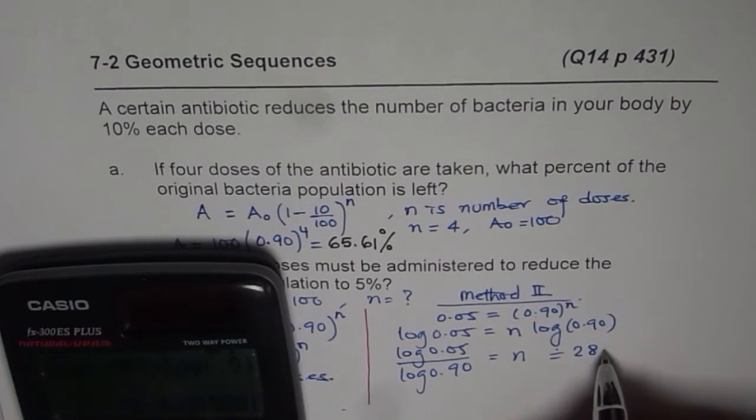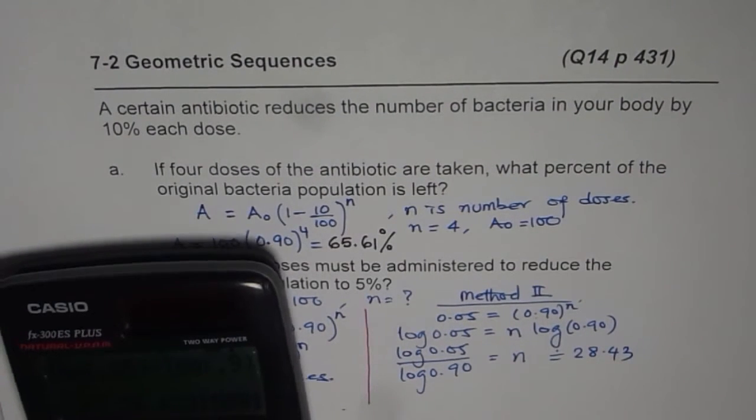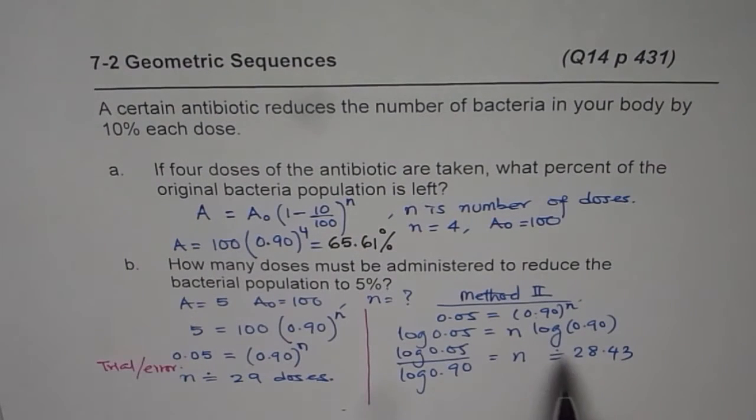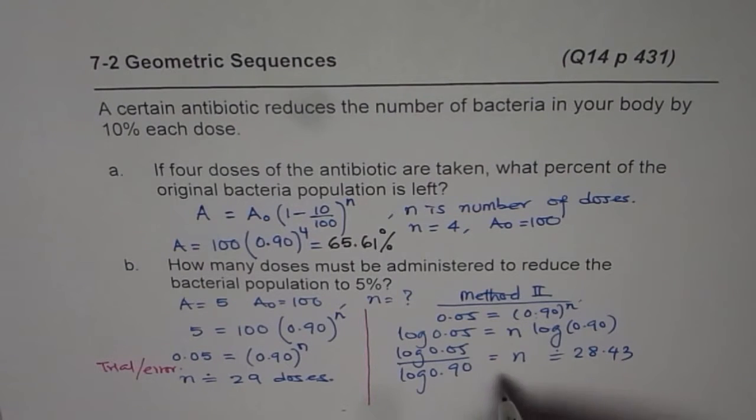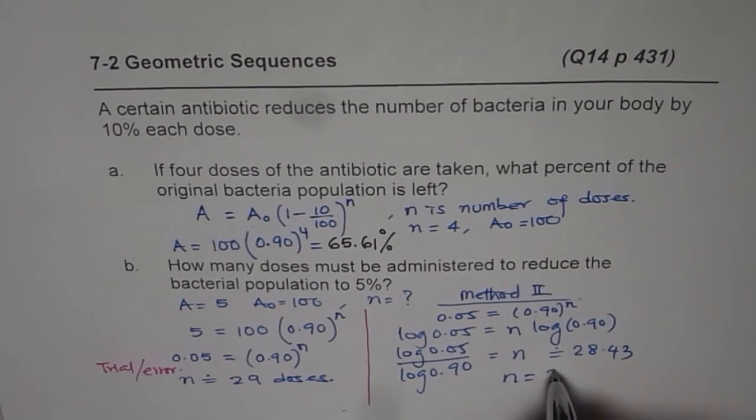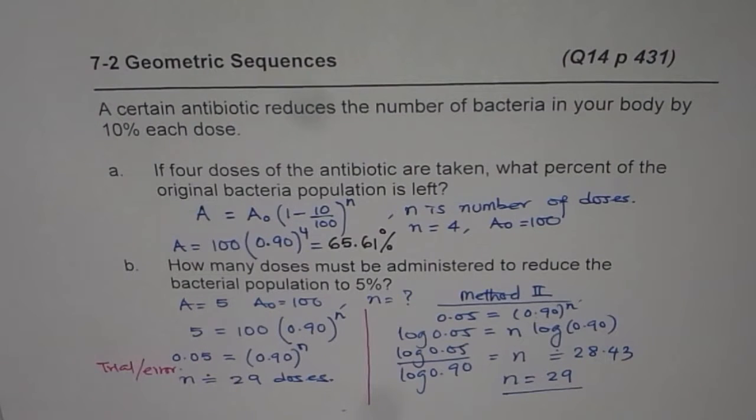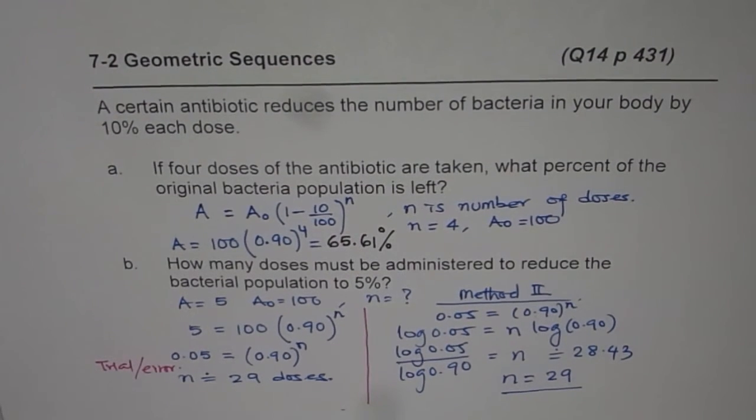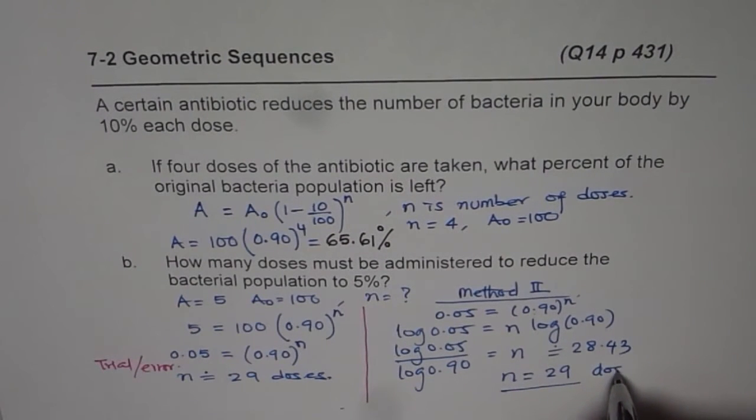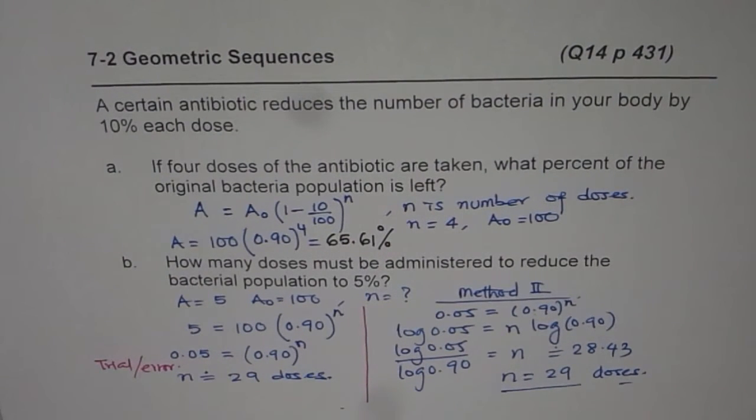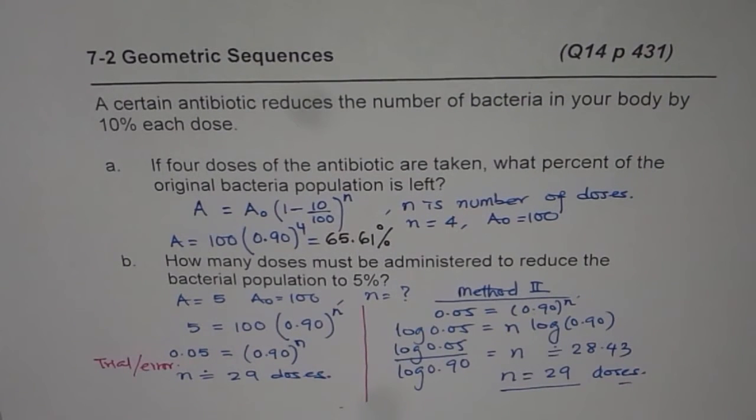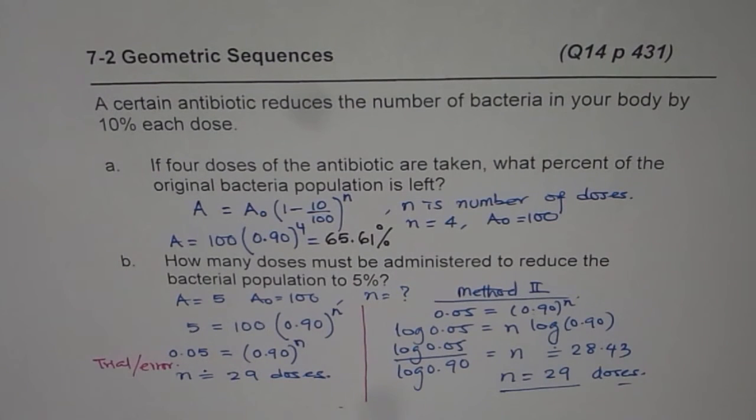Since doses is a natural number, 1, 2, 3, 4, we cannot take decimal values, therefore n should be equal to 29. So that is how we can get the answer both ways. The number of doses is 29 doses. After 29 doses the percentage population of bacteria will be less than five percent. That's what we are saying. I hope that helps. Thank you and all the best.